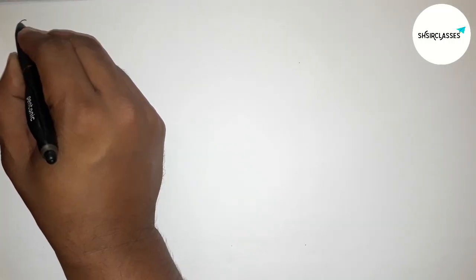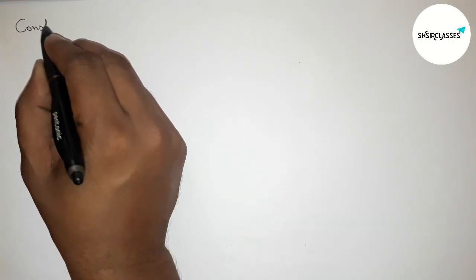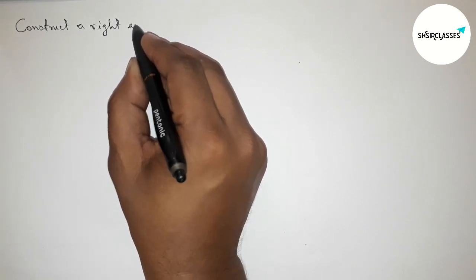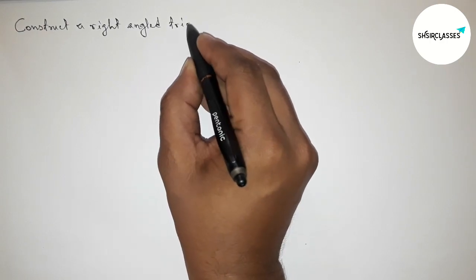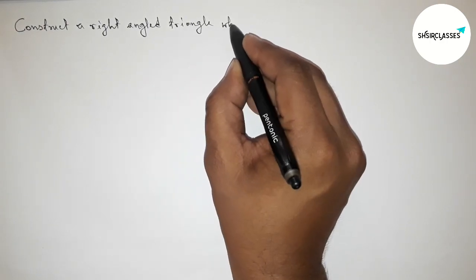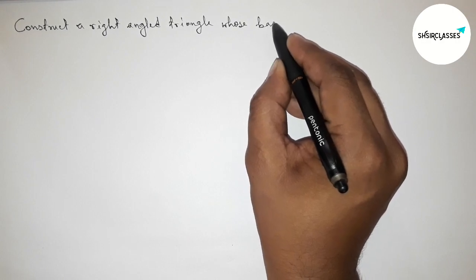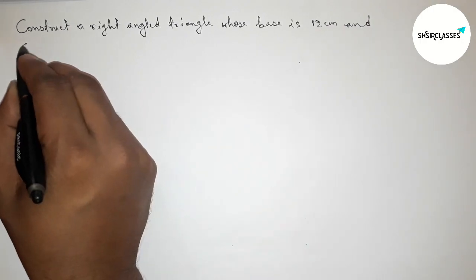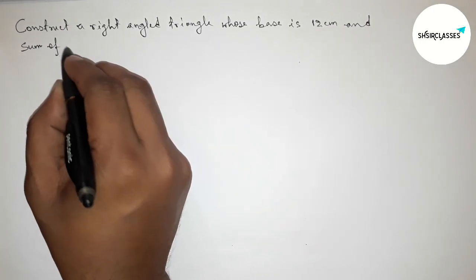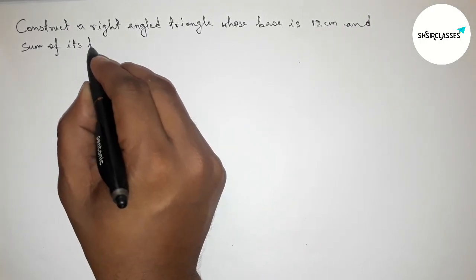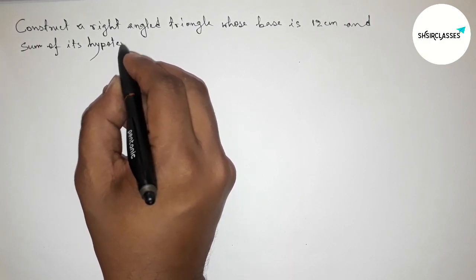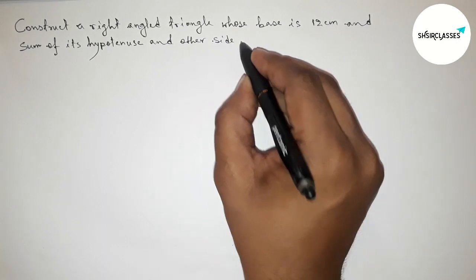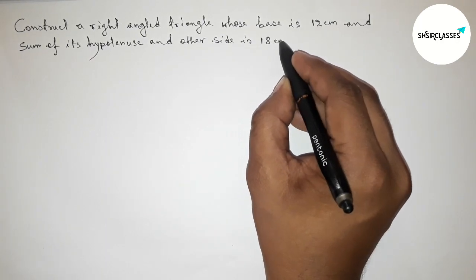Hi everyone, welcome to SI Share Classes. Today in this video we have to construct a right-angled triangle whose base is 12 centimeters and the sum of its hypotenuse and other side is 18 centimeters. I'm going to construct this right-angle triangle using another method in an easy way, so please watch the video till the end.